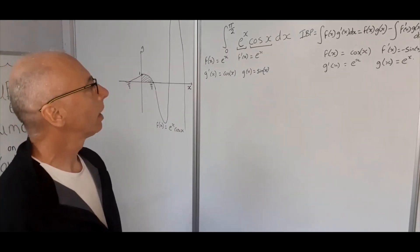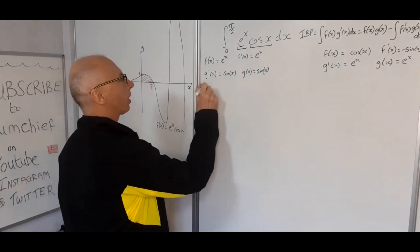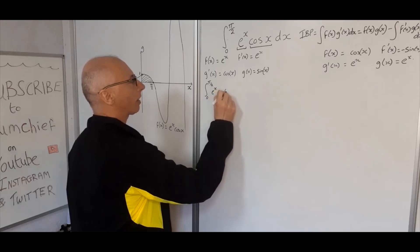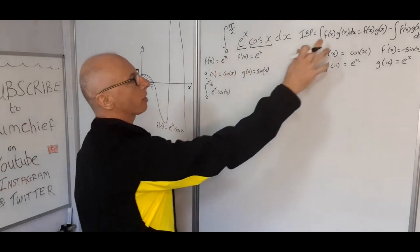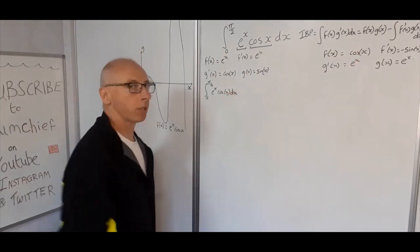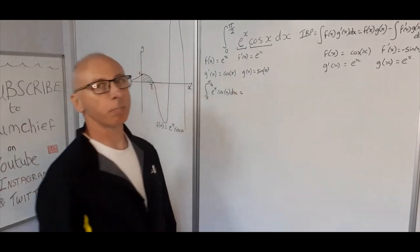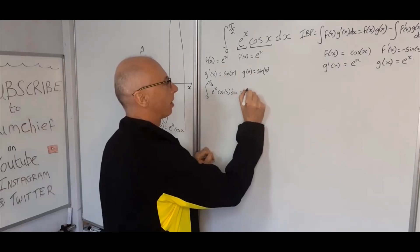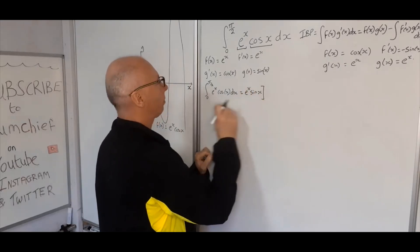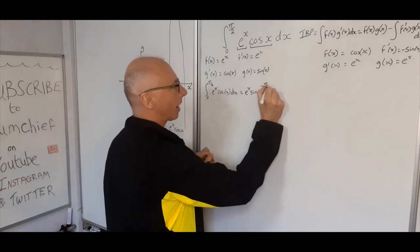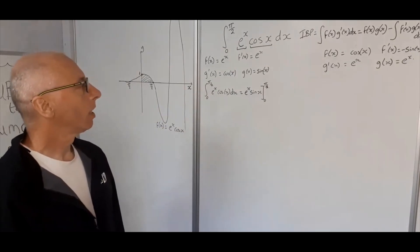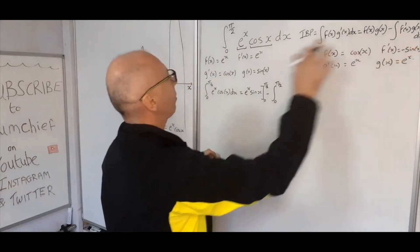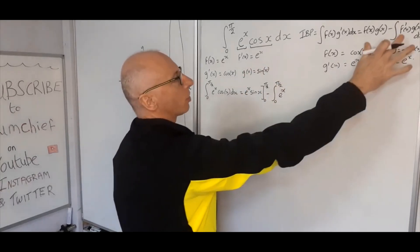Let's plug into our formula. The integral from 0 to pi over 2 of e to the x cosine of x dx — that's our f of x g prime of x — equals f of x g of x, which is e to the x sine of x evaluated from 0 to pi over 2. Then we subtract another integral from 0 to pi over 2 of f prime of x g of x, which is e to the x times sine of x.